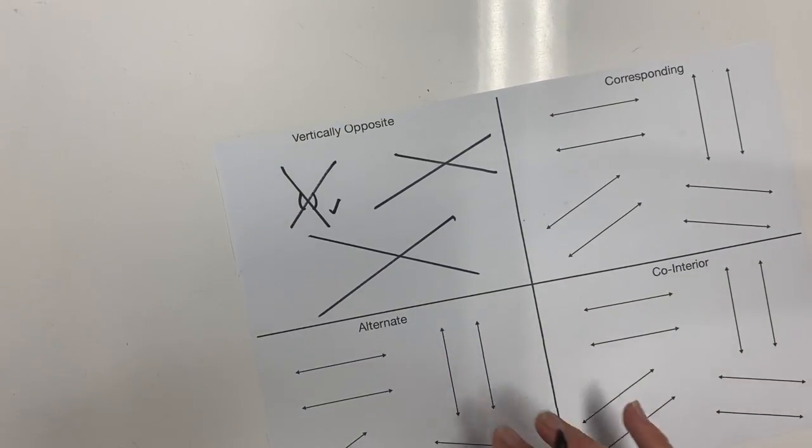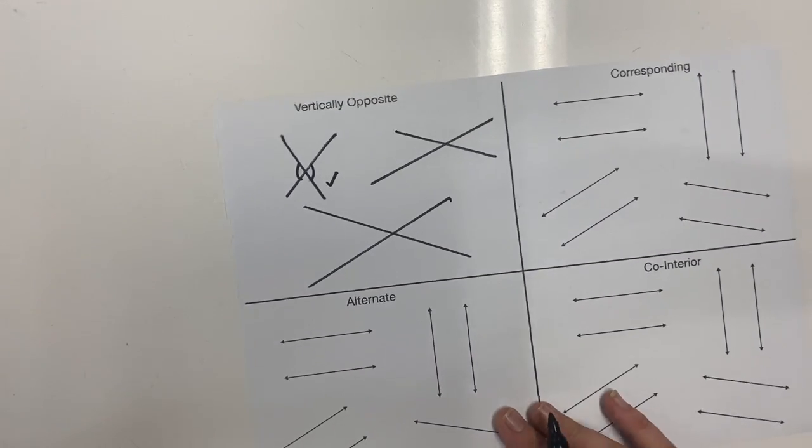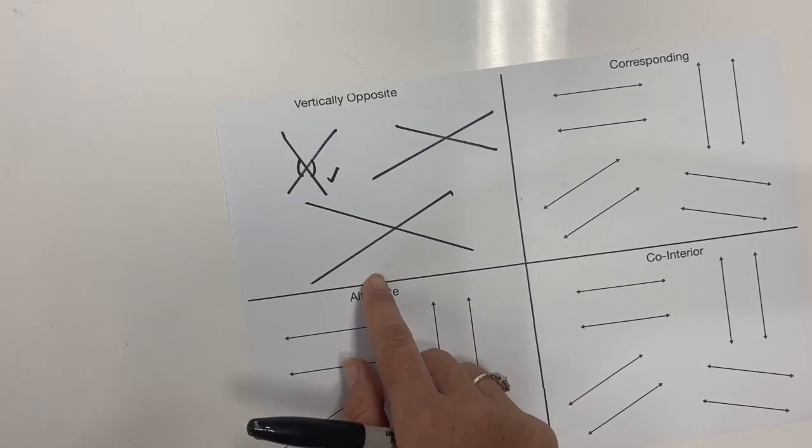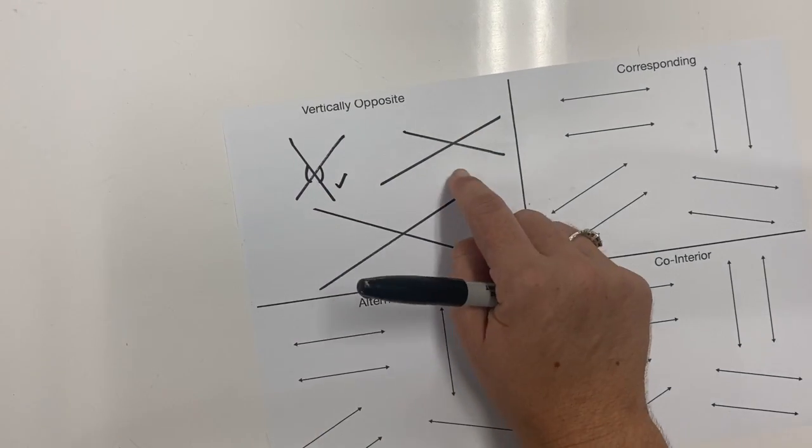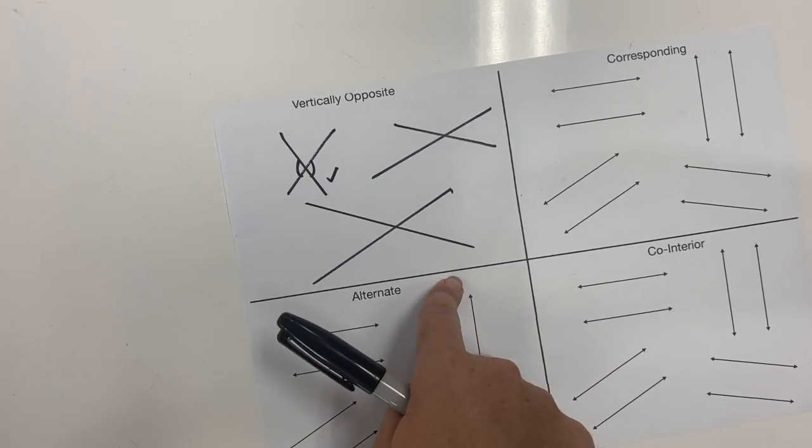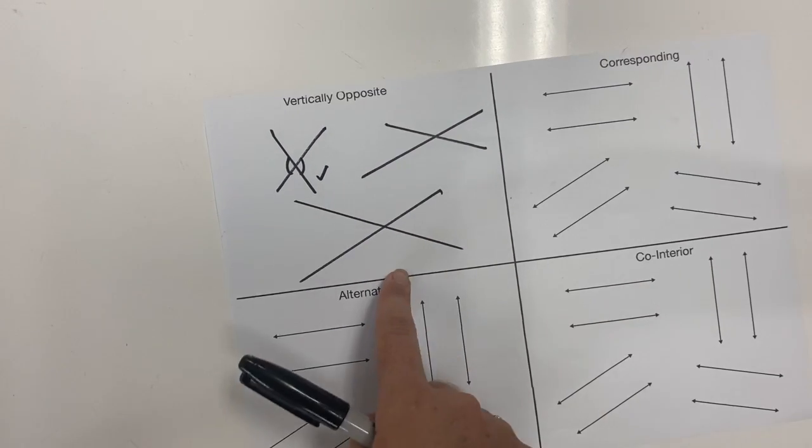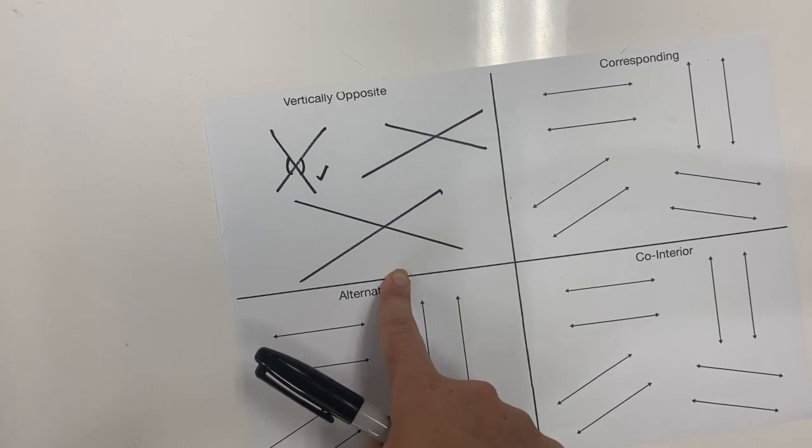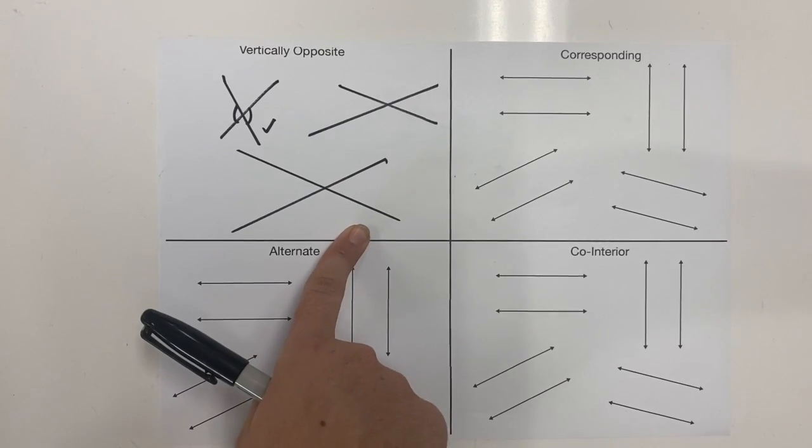If you want to pause the video now, get your baking paper, draw some lines with a ruler, and prove that each of them have the same size on each vertically opposite angle. If we all do that, then we'll have almost a hundred proofs that it always works. Pause the video now.